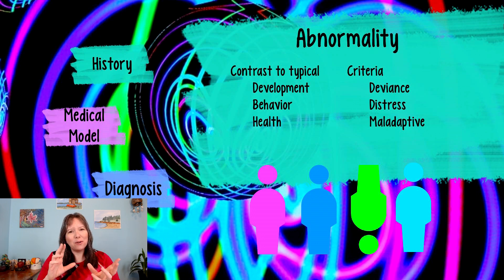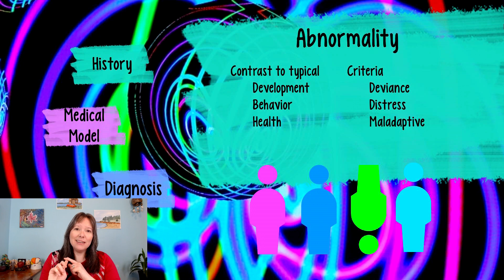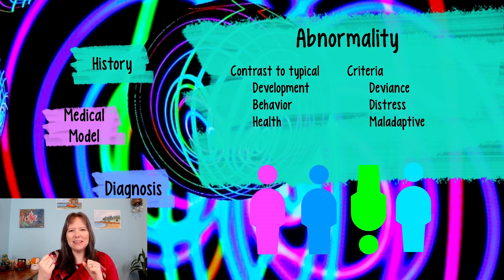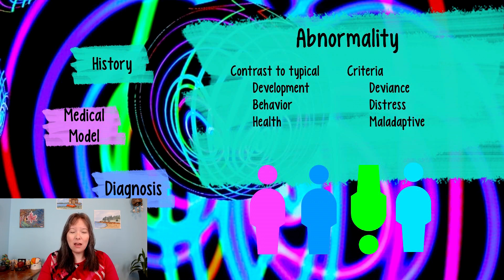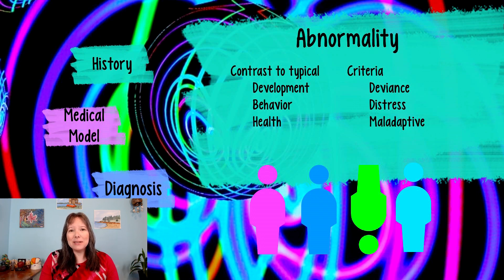In terms of defining what qualifies as a disorder or not, most clinical psychologists rely on three types of criteria. The first is deviance — the idea that something is deviating from the norm, that something is unusual. However, this one criteria in and of itself is not enough to qualify as a disorder. It also has to include a significant amount of distress, either to the person experiencing the deviance or the people around them, and it has to be considered maladaptive — in the long term it's not going to help one's life, relationships, finances, or health.